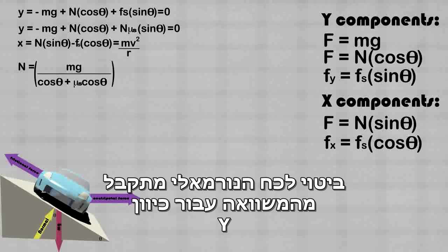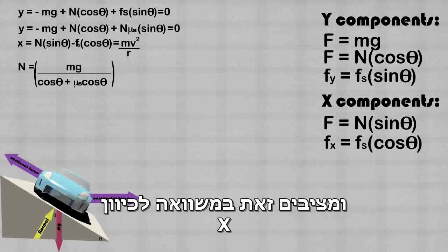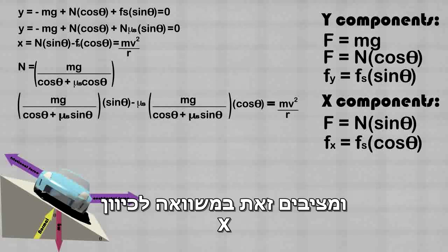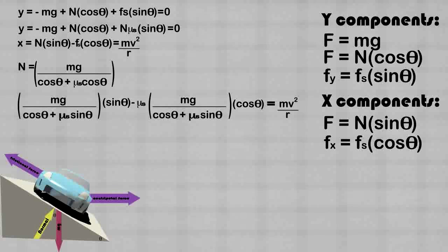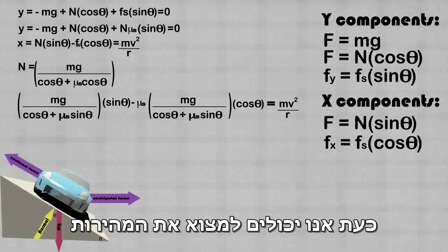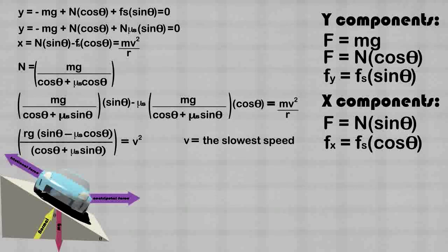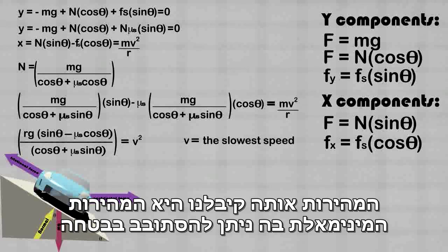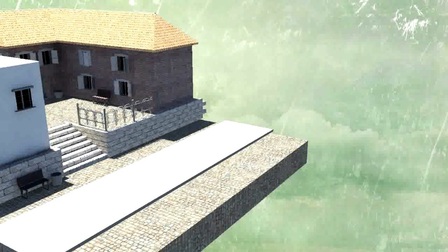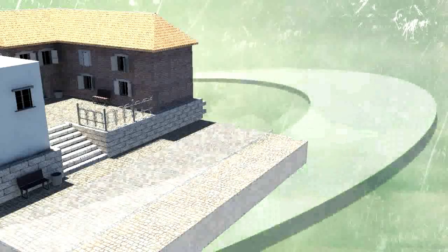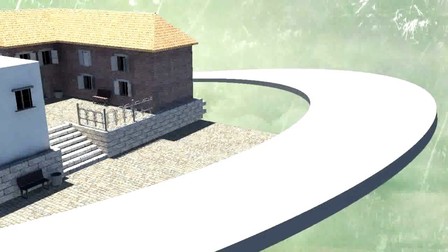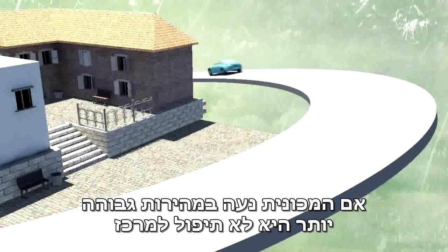We solve for the normal force with our y equation. Then we can substitute this in for the normal force in the x equation. We can now solve for v. Notice that the mass of the car cancels out of the equation. The v that we have solved for is the slowest speed necessary to safely make it around the inclined turn.